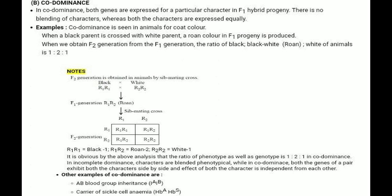In codominance, both genes are expressed for a particular character in the F1 hybrid progeny. There is no blending of character; both characters are expressed equally. An example of codominance is seen in animal coat color: when a black parent is crossed with a white parent, a roan color in the F1 progeny is produced.